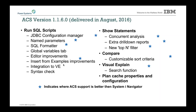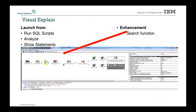Little blue stars next to some of these items indicate that what we delivered in ACS is significantly better than what the old tooling in Access for Windows was. We listened to what customers were complaining about or how we could make it better, and those are the things we did when we reinvented this new support. A bunch of new things were added under show statements and compare, and we also delivered Visual Explain this year, which was pretty exciting.